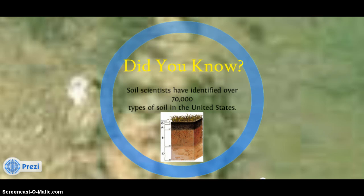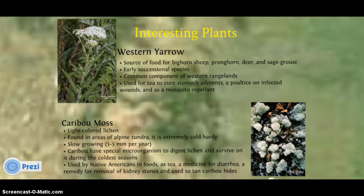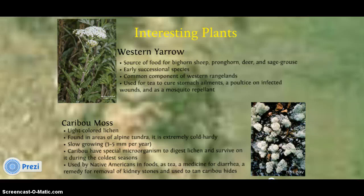Did you know? Soil scientists have identified over 70,000 types of soil in the United States. Some interesting plants: western yarrow is a very common plant in western rangelands and an important food source for several big game species, with many ethnobotanical properties used in traditional medicine. Another interesting plant is caribou moss, a light-colored lichen found in alpine tundra regions that is an important part of the diet of caribou and was also important to many Native Americans.